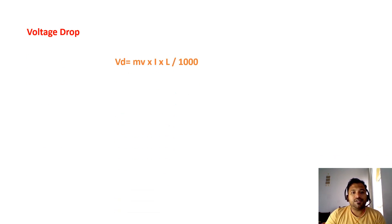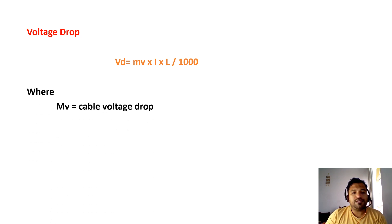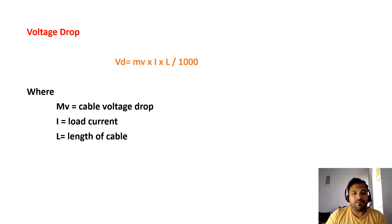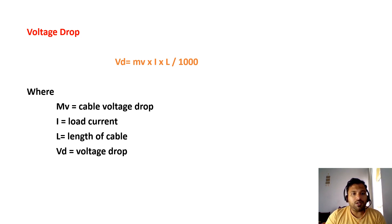Basically, the voltage drop formula is: VD = MV × I × L / 1000, where MV is the cable voltage drop, I is the load current, L is the length of cable, and VD is the voltage drop. With the help of this formula, we will calculate voltage drop calculations.